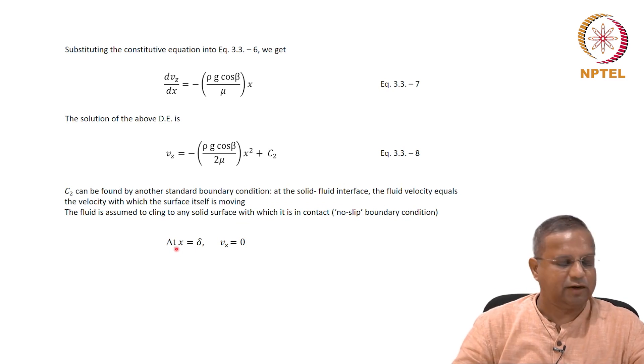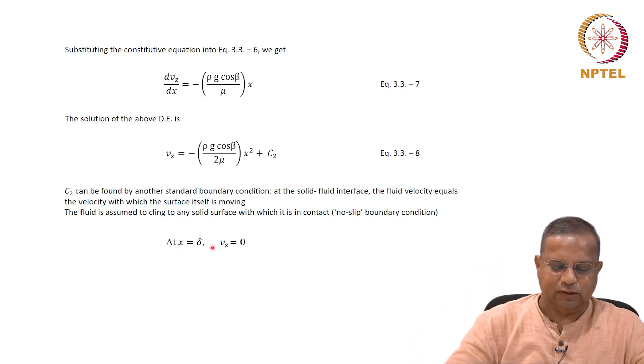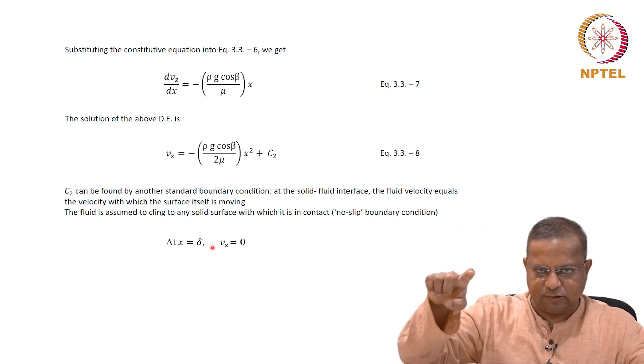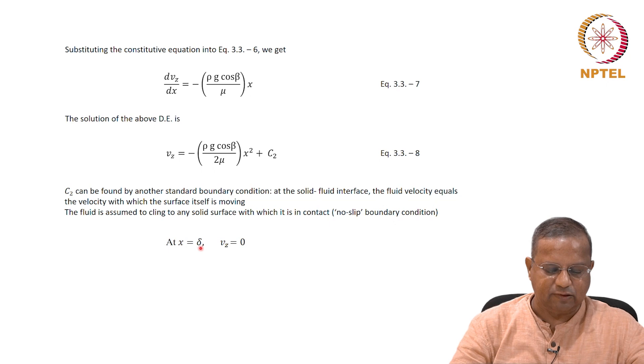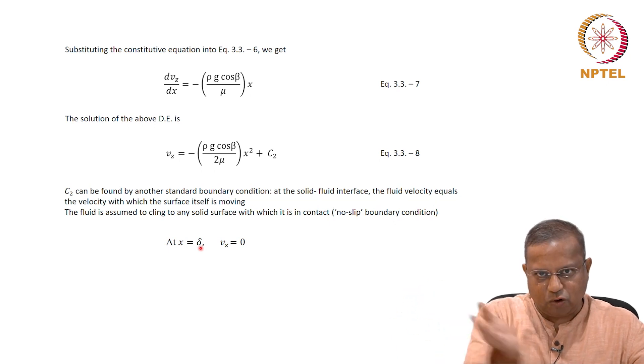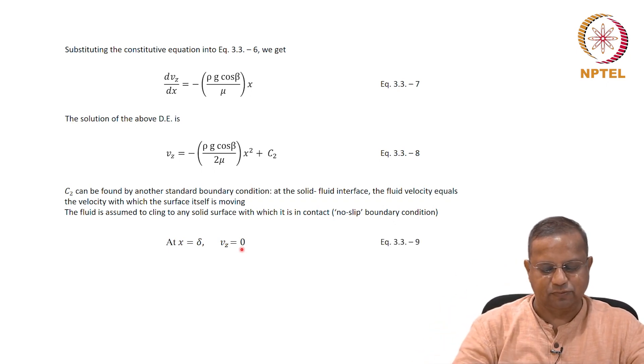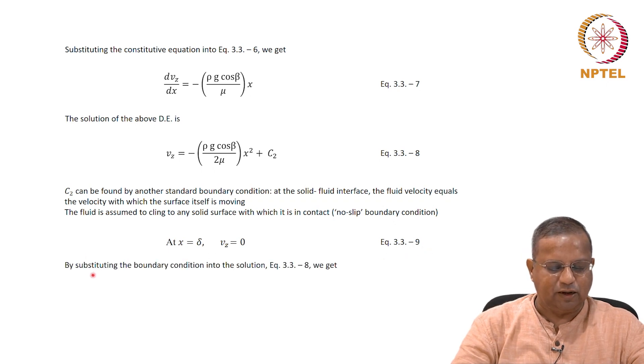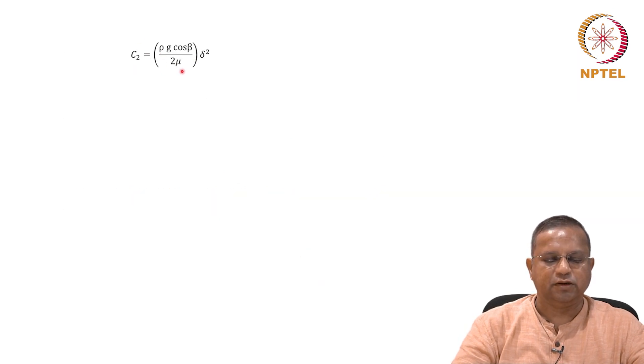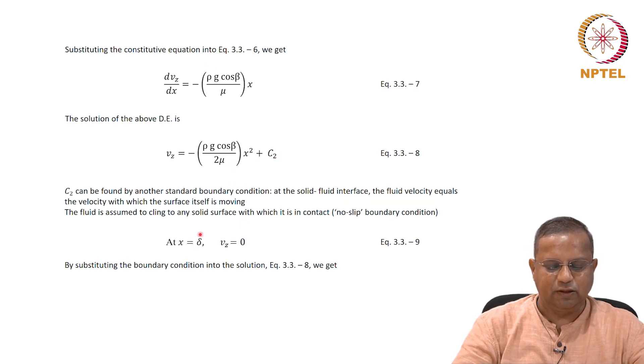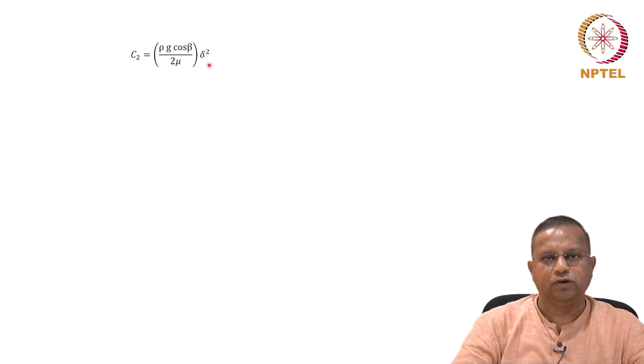Here the boundary condition can be written as: at x equals delta, the x coordinate is in this direction, x equals 0 is the surface of the liquid layer, x equals delta is the wall or solid surface, and there vz, the velocity of the liquid, equals 0. Note the liquid is a system, therefore the velocity of the liquid is 0. This is equation 3.3-9. If you substitute this boundary condition, we get c2 equals rho g cos beta by 2 mu times delta square. If you put x equals delta, vz equals 0, and therefore c2 becomes this term.